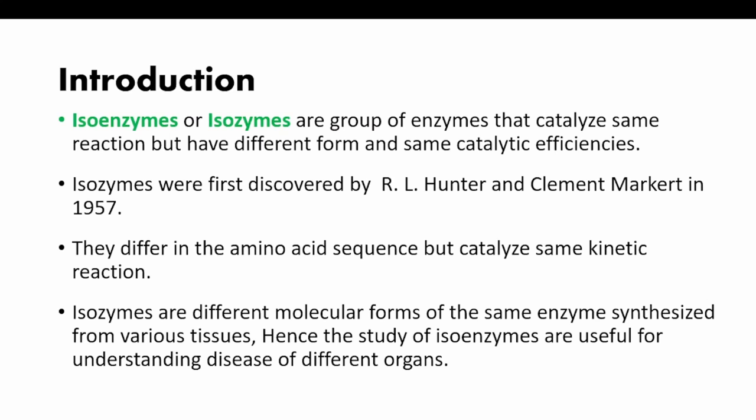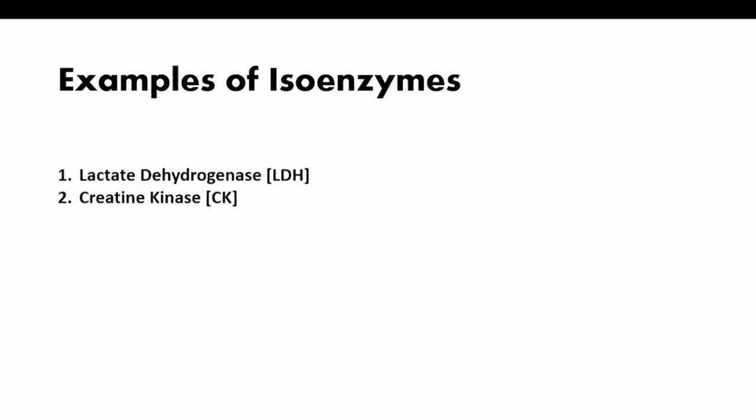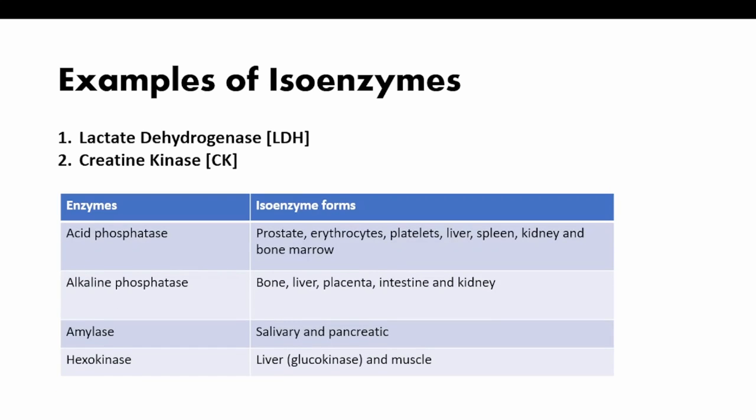Lactate dehydrogenase, or LDH, has five forms: LDH1 to LDH5, which we will look into in detail later. Other examples of isozymes include acid phosphatase, alkaline phosphatase, amylase, and hexokinase, all present in different tissues.